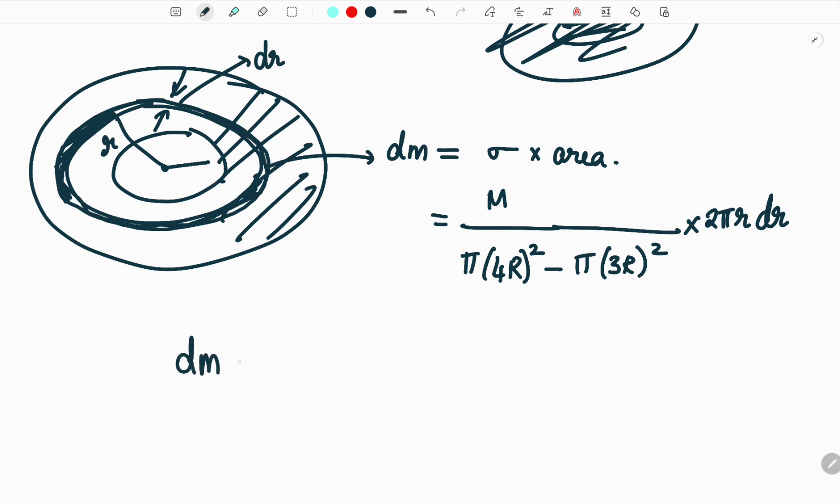So what is dm? dm is equal to capital M divided by, 4 into 16, so I will take π common, I will get 16r square minus 9r square into 2πr dr.